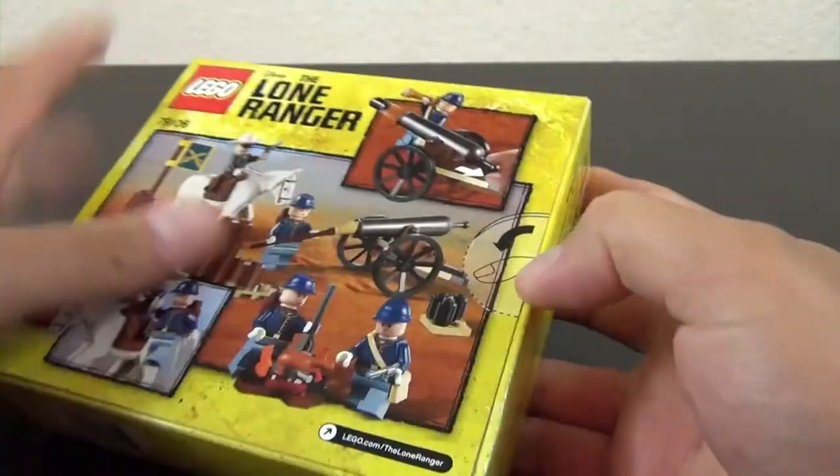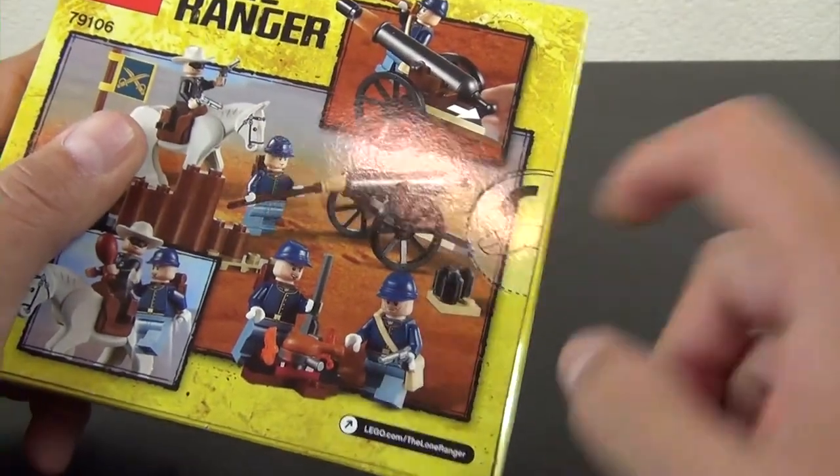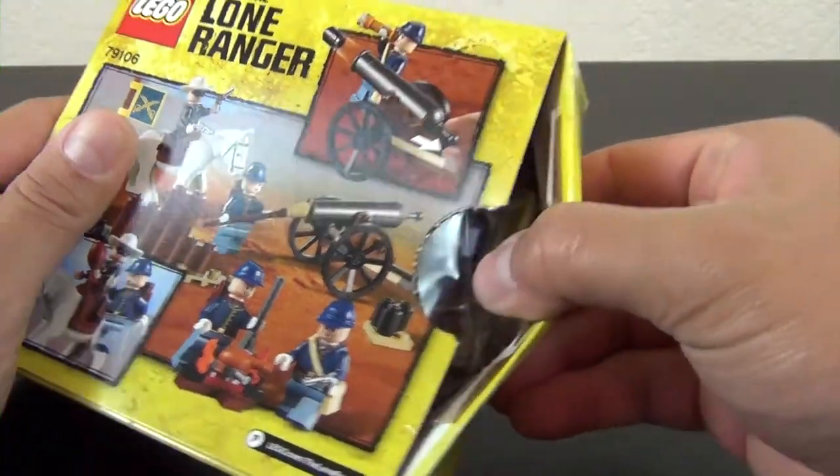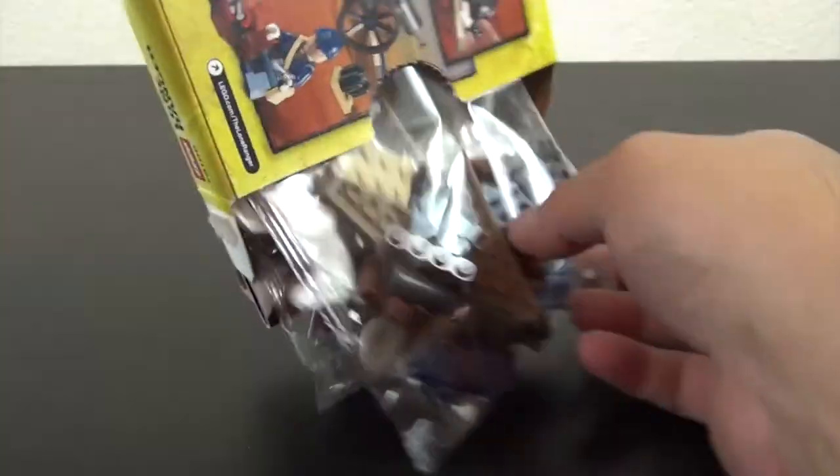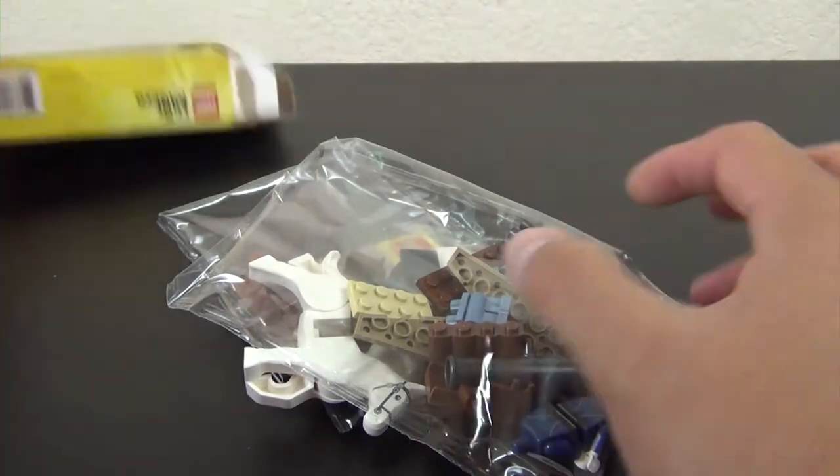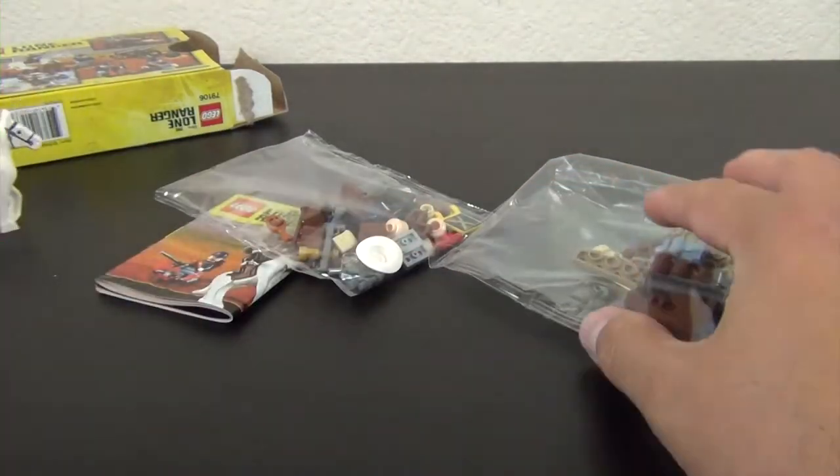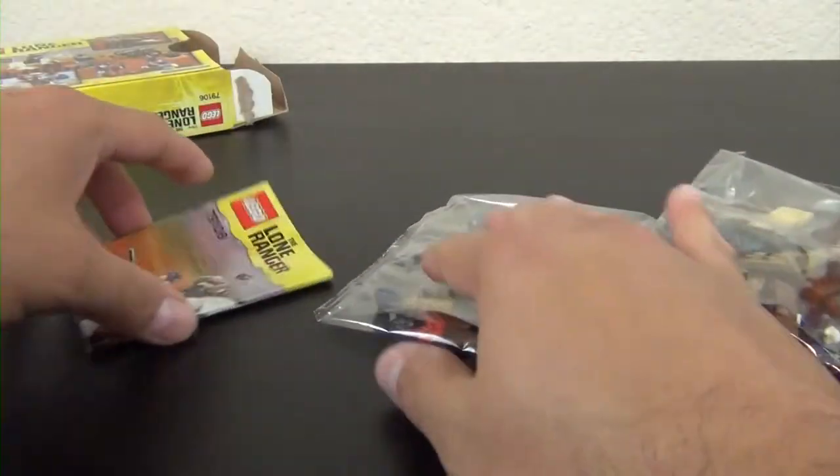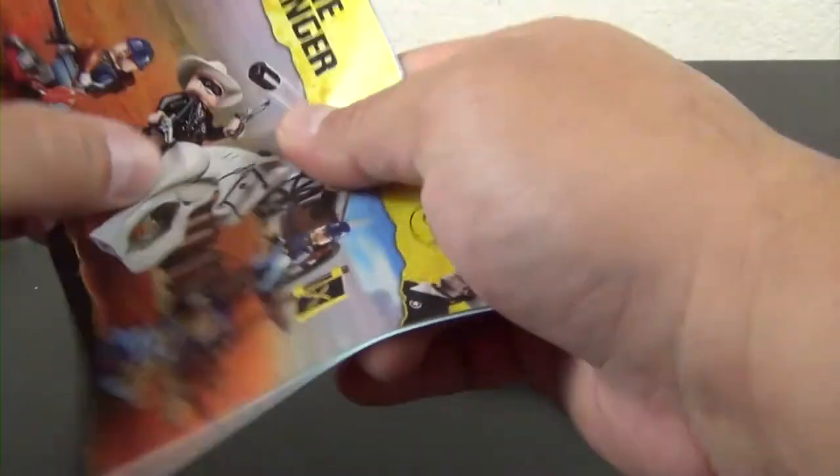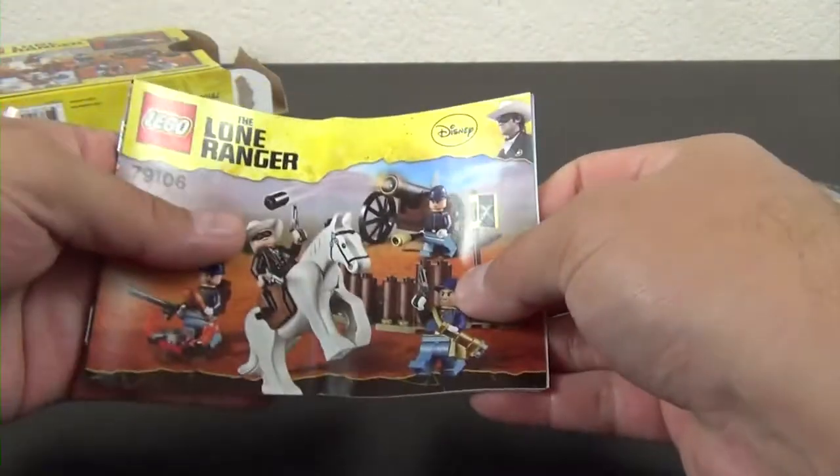Let's go ahead and bust this open. This box doesn't have tape, it has the little finger hole there, so it basically rips the box open. All right, so we have the white horse that's not in the bag, we have two bags and the single instruction book that's folded in half.